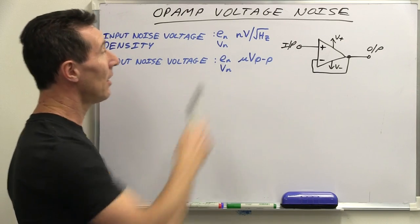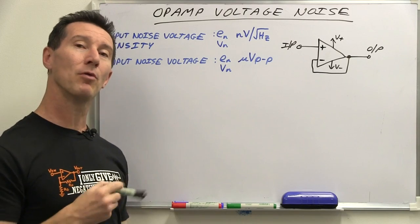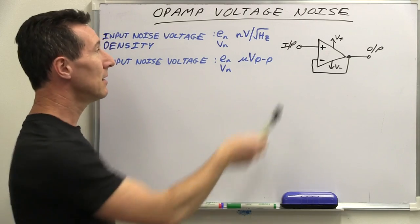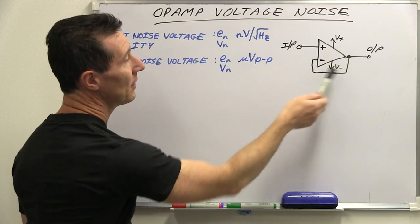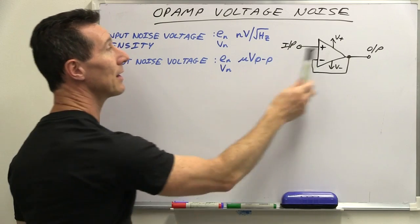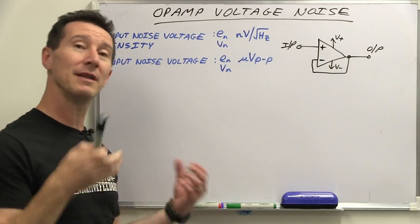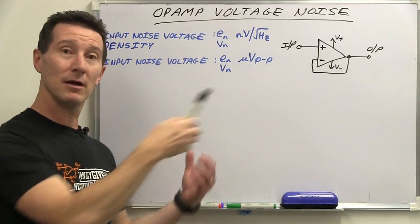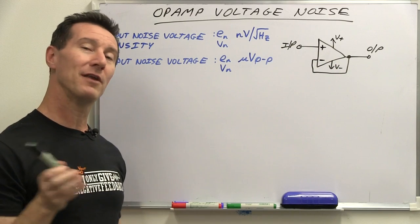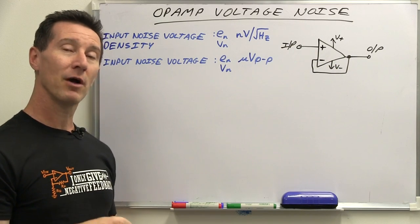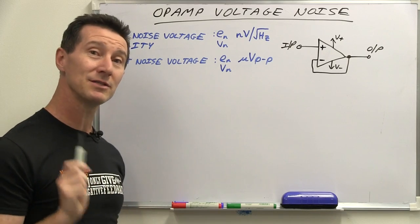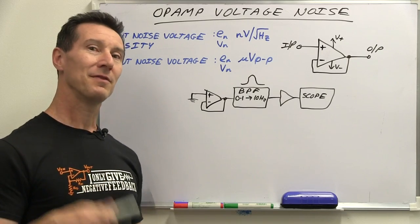In the case of the OP-07, we've got 0.35 microvolts peak-to-peak input noise. So if we've got a voltage follower like this with a gain of one, we're going to get an output noise — an inherent noise in our complete amplifier — of that 0.35 microvolts peak-to-peak. Real easy to understand, but there's a catch.